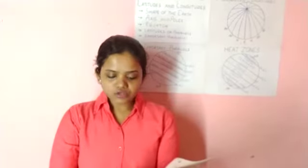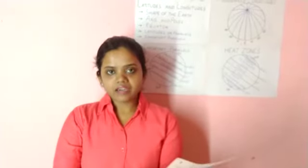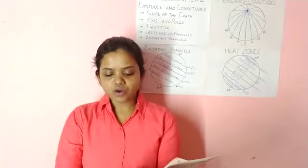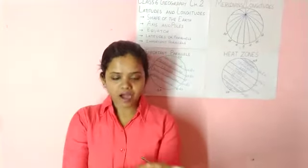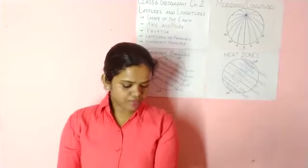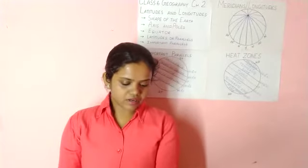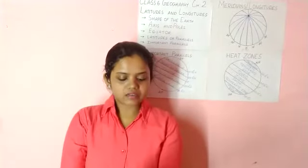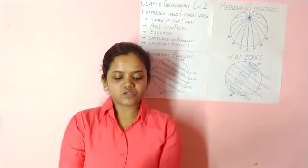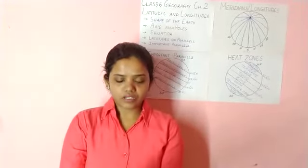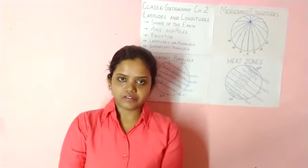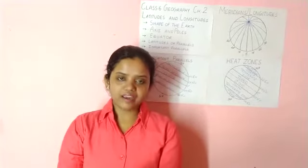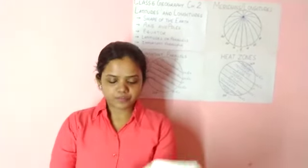Long answer two: what are the main characteristics of the meridians? This also you mark in the book. Page number 98, right side. The meridians or the lines of longitude have the following characteristics. You have to write all five.